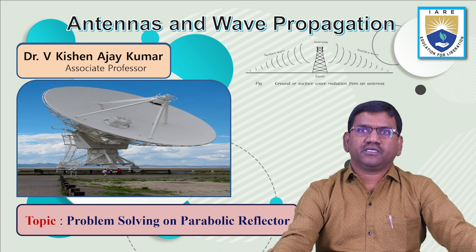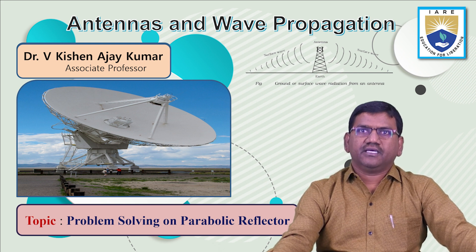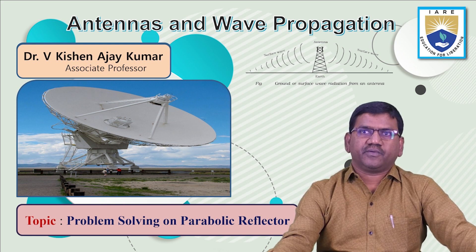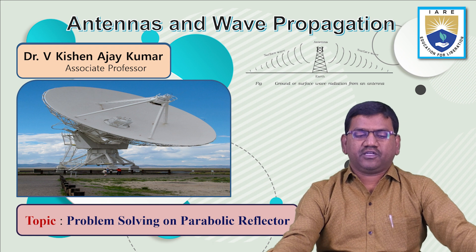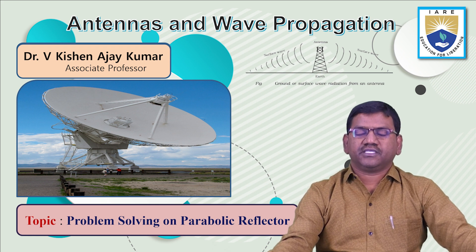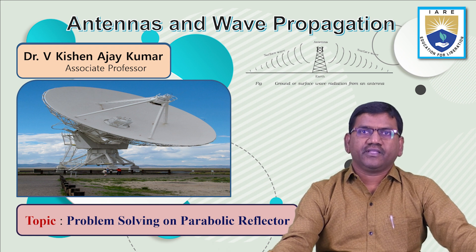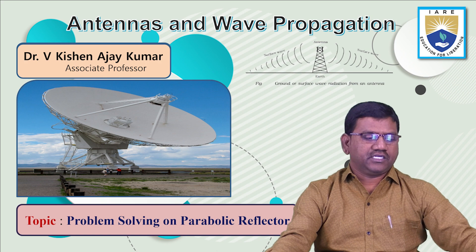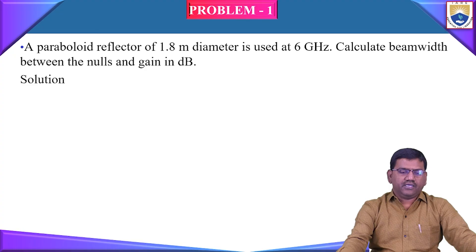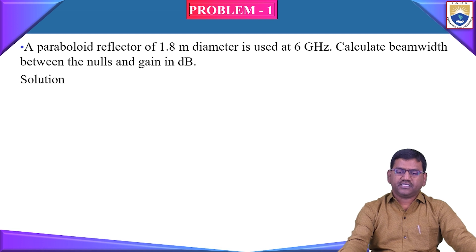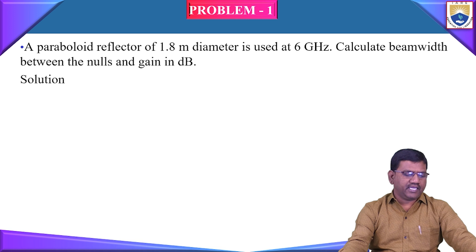Today's topic is the problems on parabolic reflector antenna, and this topic is related to the course Antennas, Waves and Propagation. Let us start our session today. A paraboloid of 1.8 meter diameter is used at 6 gigahertz. Calculate beam width between the nulls and the gain in dB.